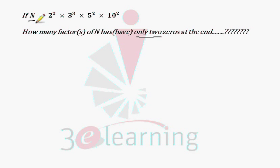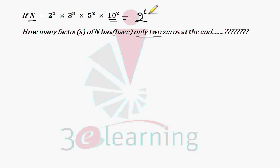First, check if n is in prime factorization or not. It's 10, so it's not a prime. Convert the number into prime factors: it's 2 raised to power 4, into 3 cubed, into 5 to the power 4. This is the prime factorization of the given n.